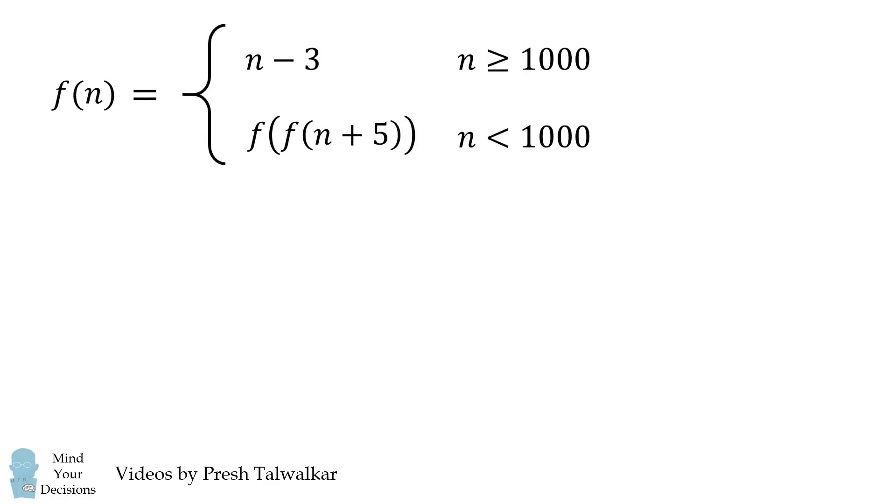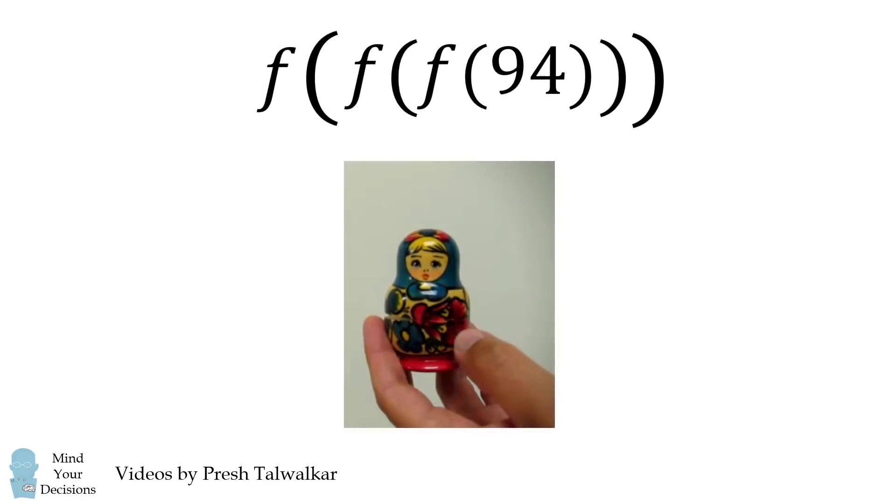So if you're like me, you tried to solve this problem by directly calculating f of 84. Since 84 is less than 1000, this is equal to f of f of 89. Since 89 is less than 1000, this is equal to f of f of f of 94. If you try working this direction a little further, it feels like you're trying to open a Russian doll.